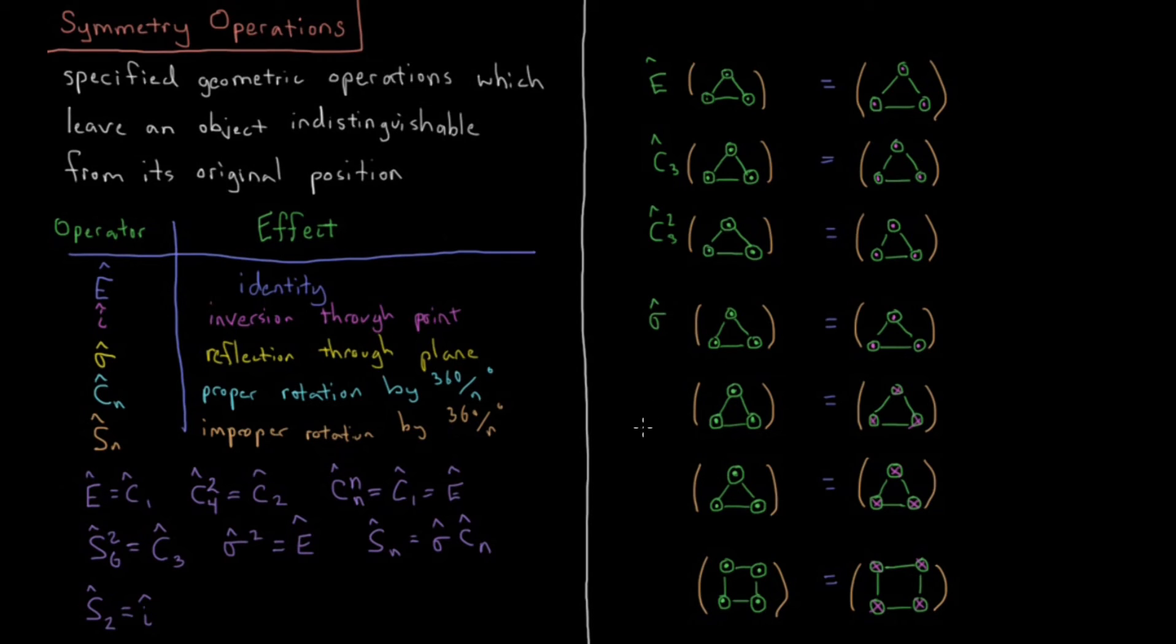Then I'm going to have a sigma V, sigma H, which I'll explain, and then S3 and i. What are they going to be the effects of these?